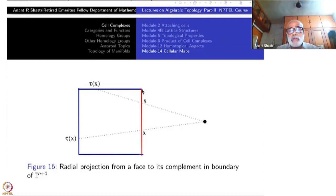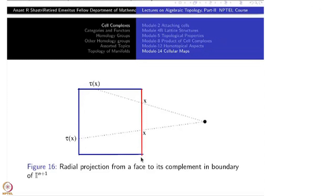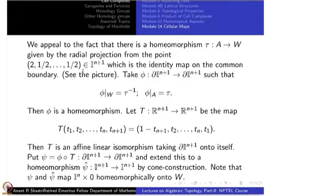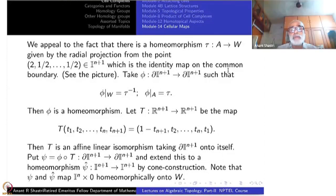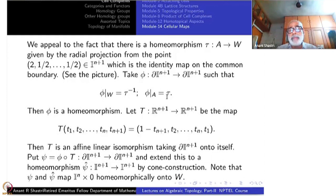When we take boundary points — namely 1 cross boundary of I^n — the projection coincides with the point on W itself, so tau is the identity on the boundary. Now define phi from boundary I^{n+1} to boundary I^{n+1} such that phi on the W part is tau inverse and phi on A is tau. On the intersection it is the identity, so these patch together to define a homeomorphism phi from boundary I^{n+1} to boundary I^{n+1}.